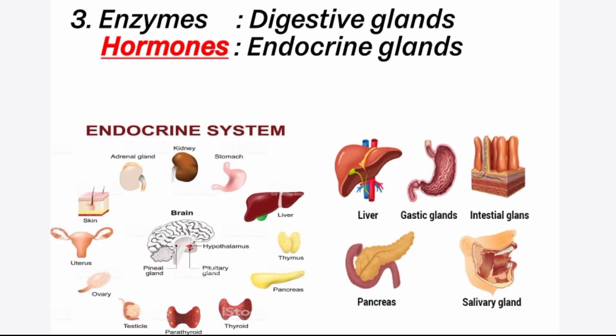Enzymes are produced or secreted by digestive glands. The endocrine glands secrete chemical substances called hormones. Thank you viewers for watching my video. Please like and subscribe to the channel.